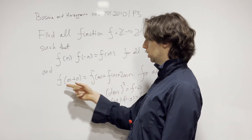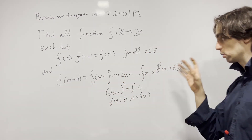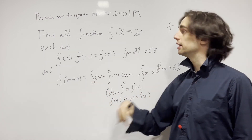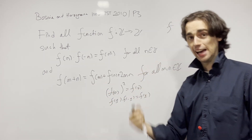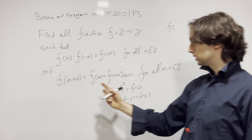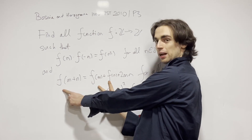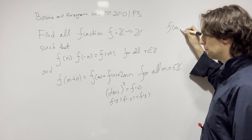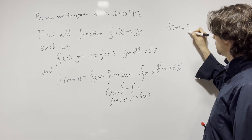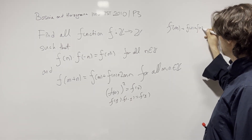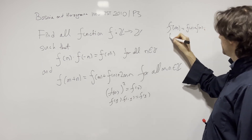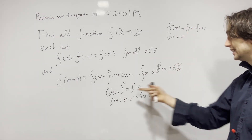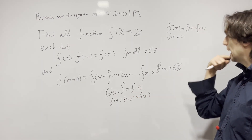Let's also see what the second condition gives us. Instead of jumping into cases right away, let's plug in n=0. The reason I'm plugging in n=0 is that I have two f's on one side and one on the other — I want to cancel those out. What I get is f(m) = f(0) + f(m) + 0, which tells me f(0) must equal 0. That's something the first condition didn't pin down — it could have been 1, but now it has to be 0.